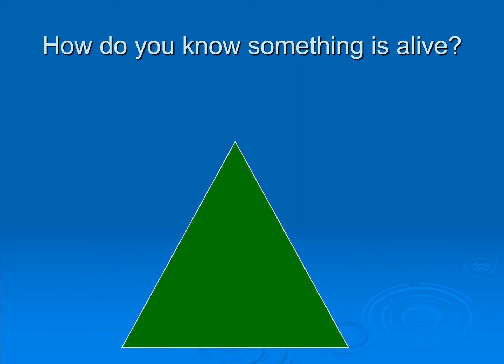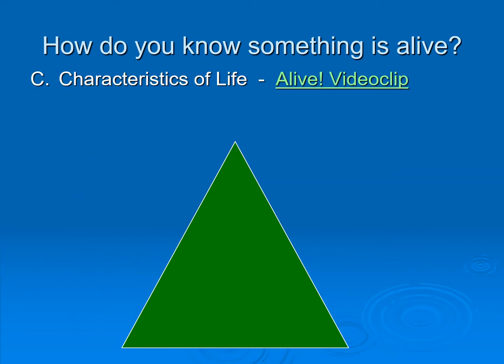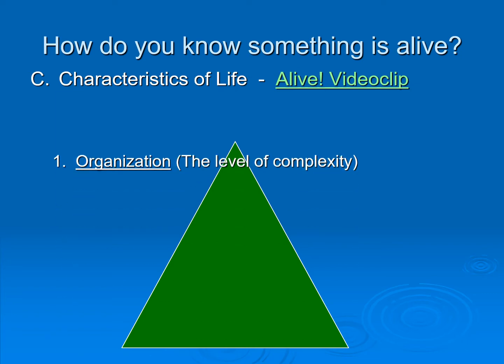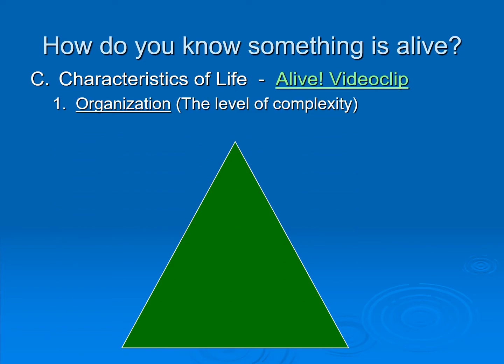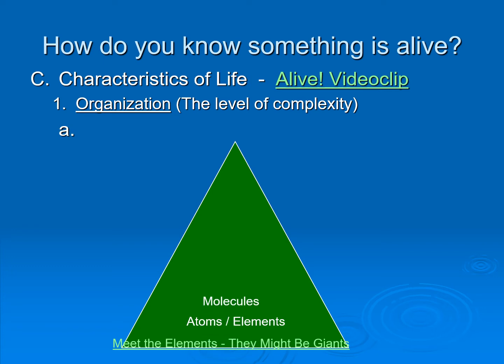So how do we know something's alive? We have the characteristics of life — and here's a video you'll need to go and watch. One is a sense of organization. Everything is made of atoms and elements, whether it's alive or not alive. You've learned about atoms and the periodic table in eighth grade. Then atoms combine to make molecules — for example, sodium chloride, made of sodium and chlorine, is our table salt.